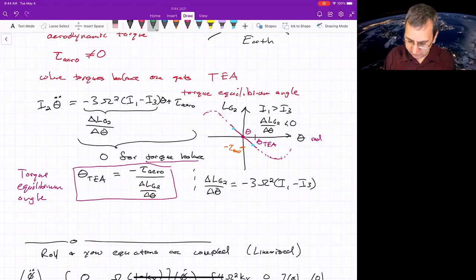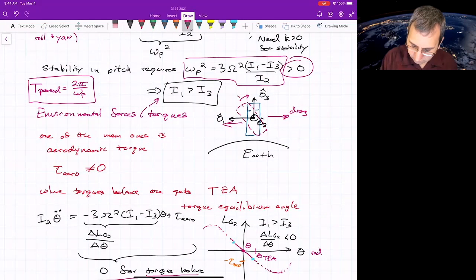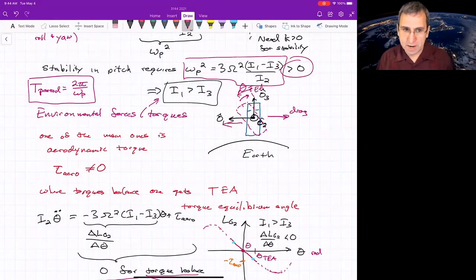So it just means like as this, I think I have a picture here. There'll be just some equilibrium angle, theta TEA. And the main environmental factor when you're in low Earth orbit would be drag due to the atmosphere. Because even at 400 kilometers altitude, there's some atmosphere.